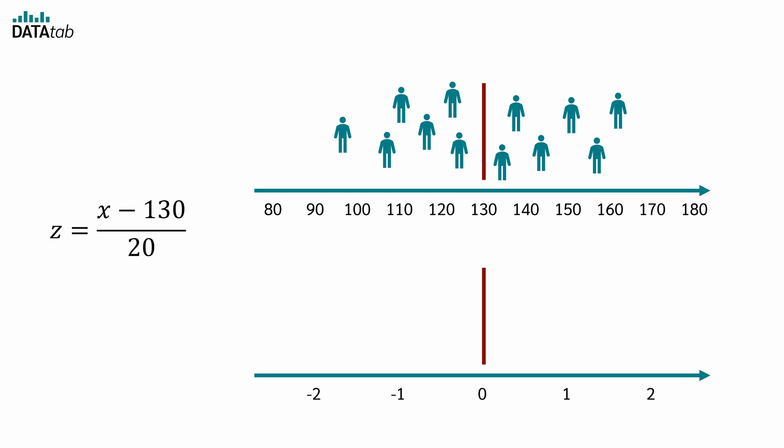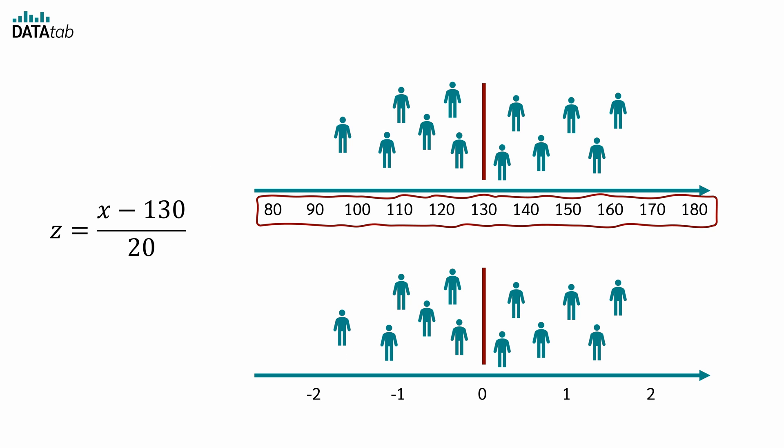Let's do that for the first two patients. In our example, this patient has a blood pressure of 97. Then we simply enter 97 for x and get a z-value of minus 1.65. So this person deviates from the mean by minus 1.65 standard deviations. The next person has a blood pressure of 108. If we use this value again for x, we get a z-value of minus 1.1. We can now do this for all patients. Regardless of the unit of the initial data, we now have an overview in which we can see how far a patient deviates from the mean value in units of the standard deviation.